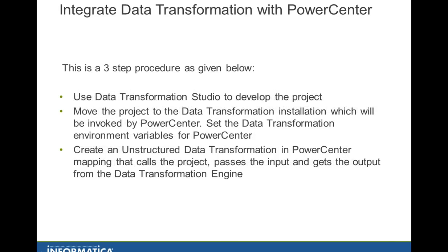There are three steps involved in this integration. First, develop the project in data transformation studio that converts the unstructured data to its structured form — basically an XML file — then deploy the project. The project will be created in the service DB folder of the client. Second, copy the full project into the PowerCenter server machine where data transformation engine is installed, and move it to the service DB of the data transformation server. In the third step, create a mapping in PowerCenter that has an unstructured data transformation.